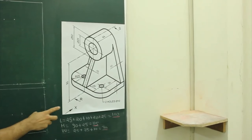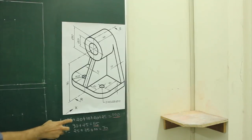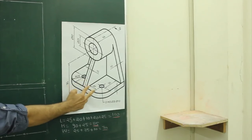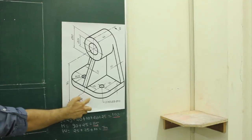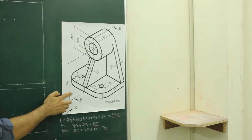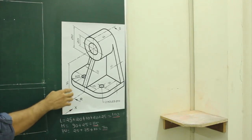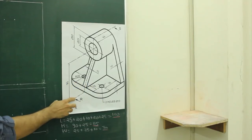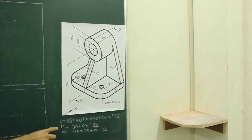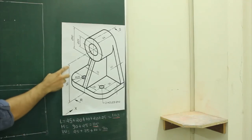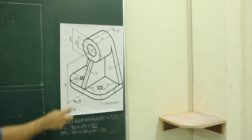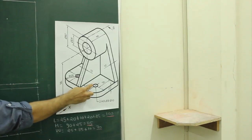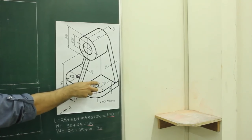In this sum, the observer is seen from this direction. The length is 100, that is 25 plus 20 plus 10, again 20 plus 25, so total length is 100. The observer will see from this side. He has to draw the front view, top view, and sectional right-hand side view, because the cutting plane line is on this side.